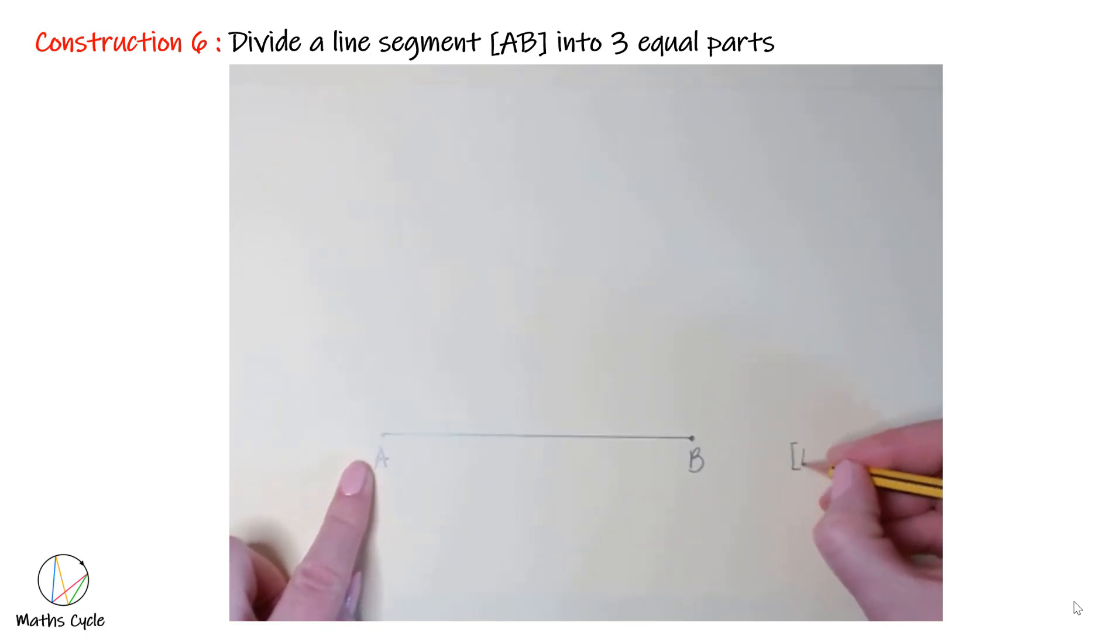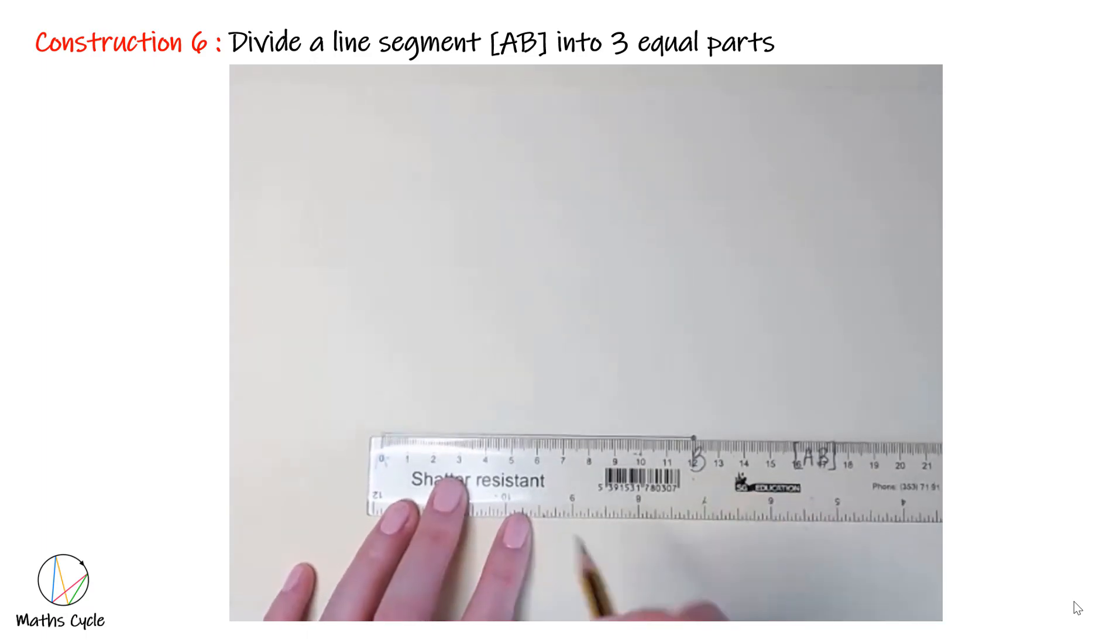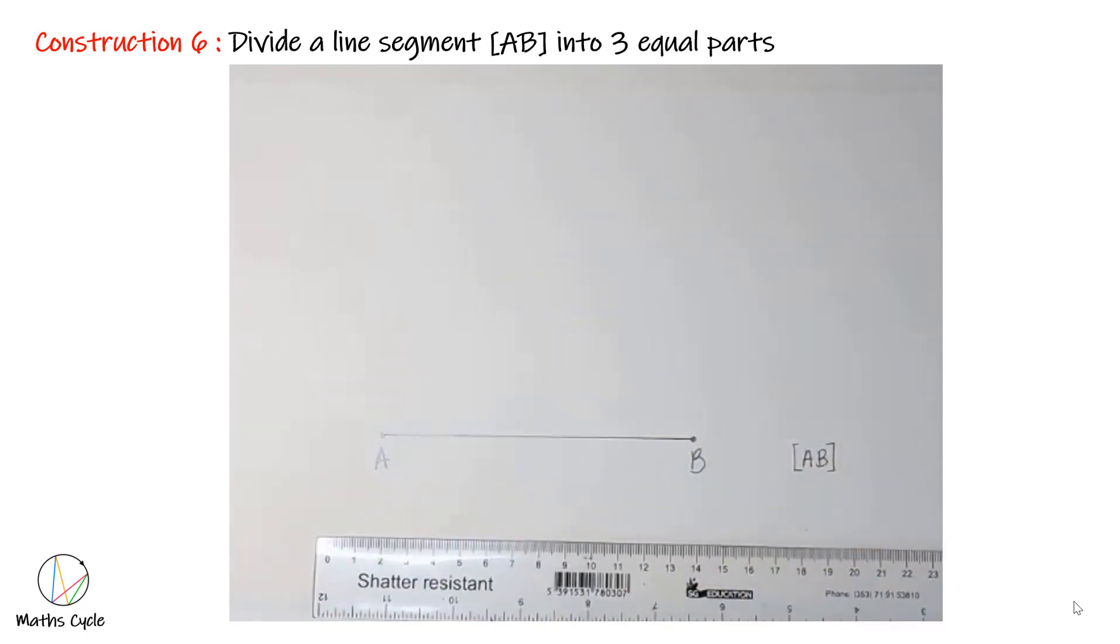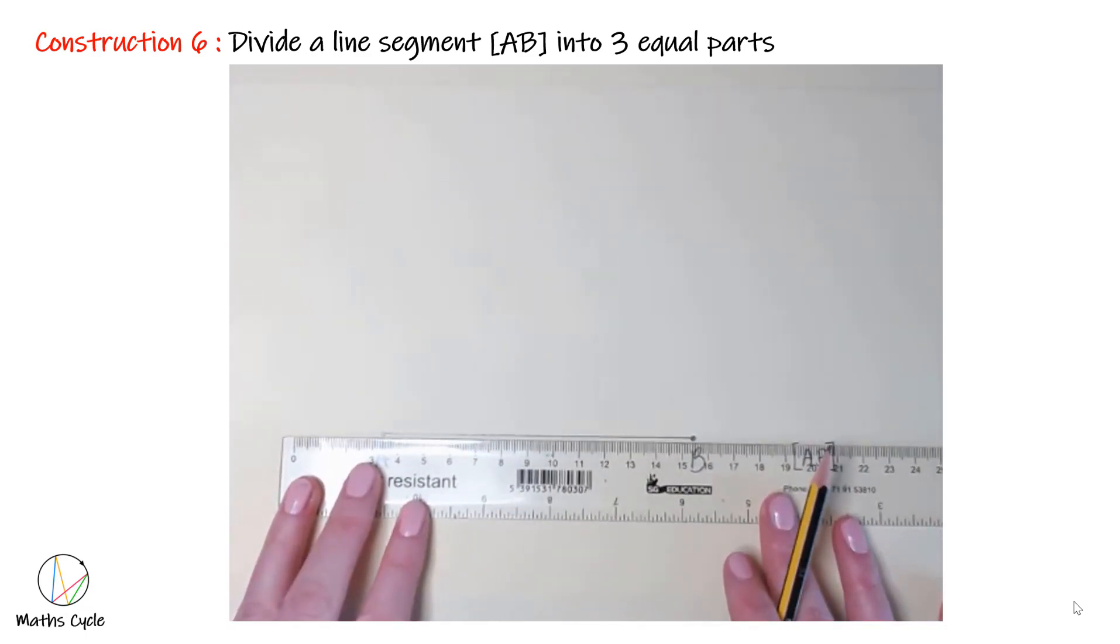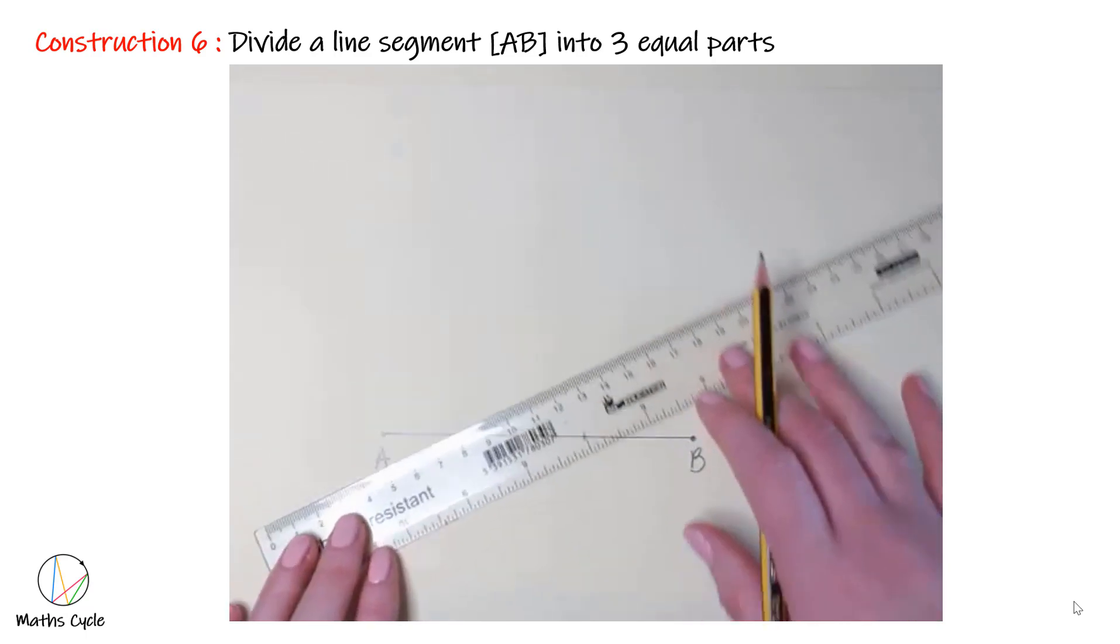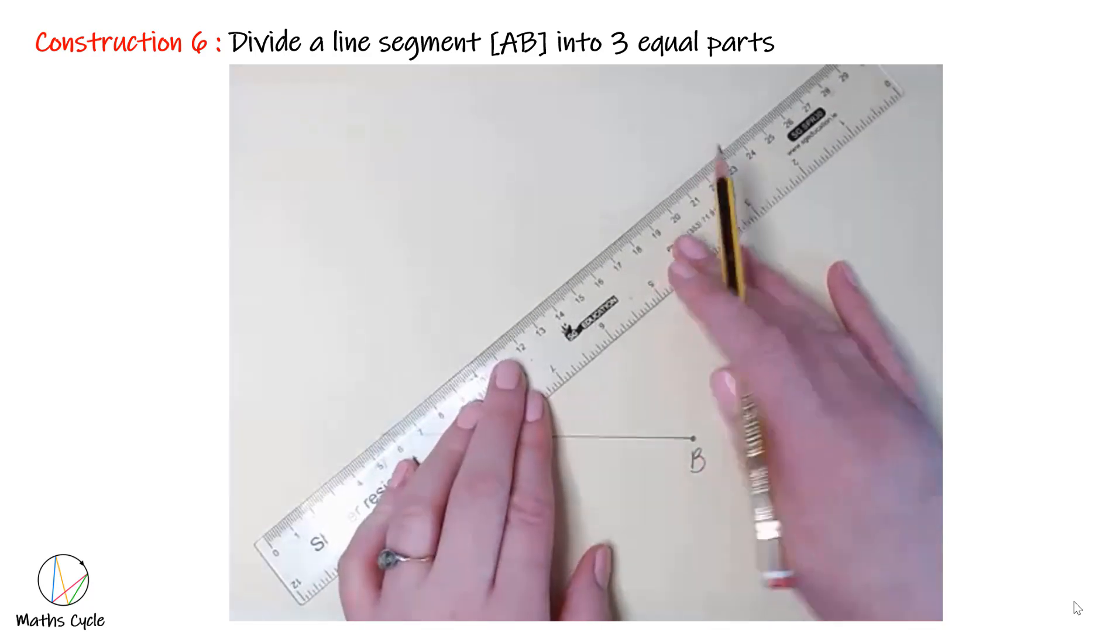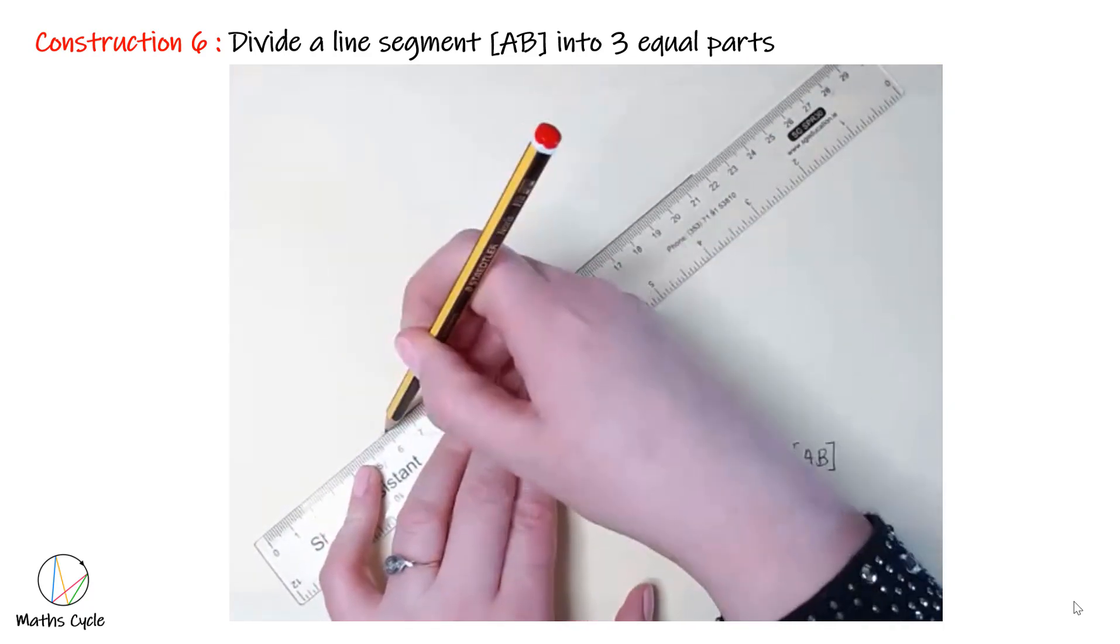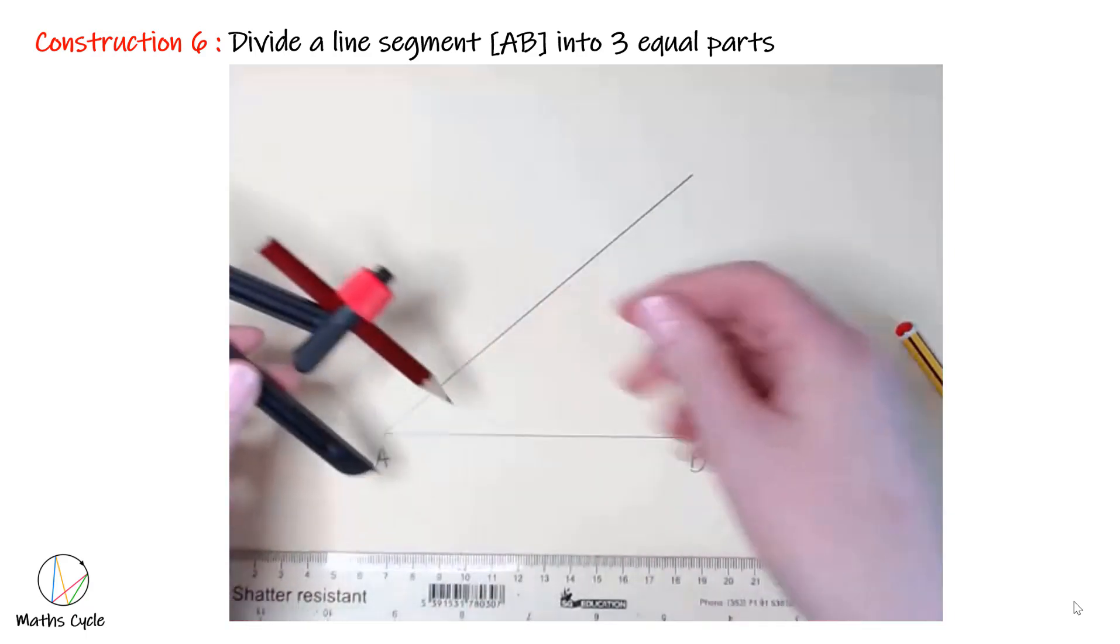That is now the line segment AB. We're going to divide this line segment into three equal parts. If we do it correctly, because I've made it 12, it should break into 4, 4, and 4. How we do this is we draw a line at an acute angle to AB. An acute angle is any angle less than 90, so just some angle that's diagonal upwards. Make it a nice long one.